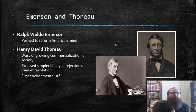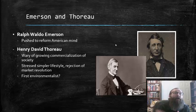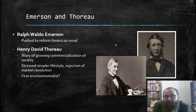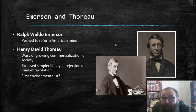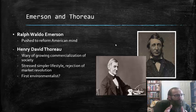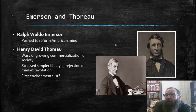Thoreau, for his part, was very wary of the growing commercialization of society. His writings, especially his book Walden, stressed a simpler lifestyle and a rejection of the Market Revolution. Transcendentalists like Thoreau were also deeply attached to nature and saw the preservation of nature as just as fundamentally important as the advancement of the individual in American society. In many ways, Thoreau can be seen as one of the first environmentalists — among the first to identify nature as something to be preserved and protected.